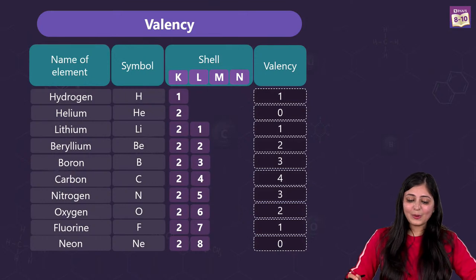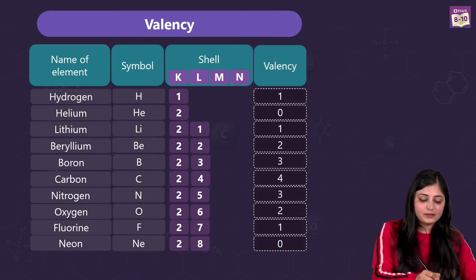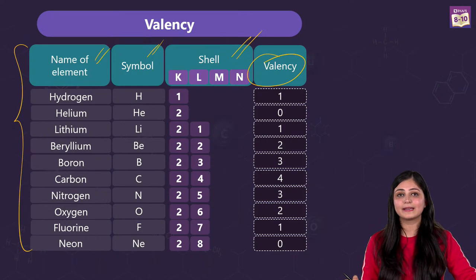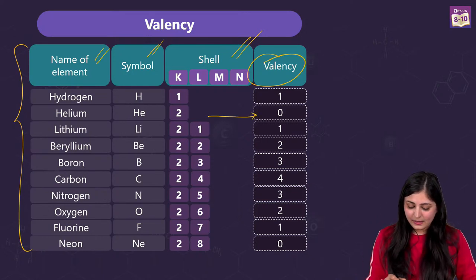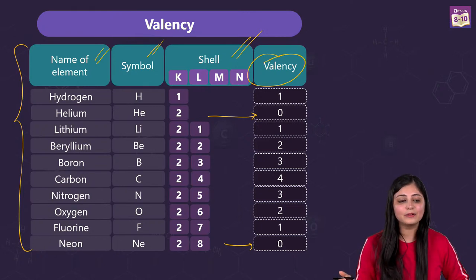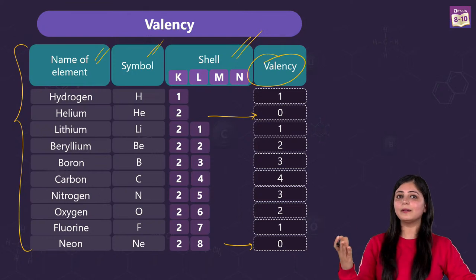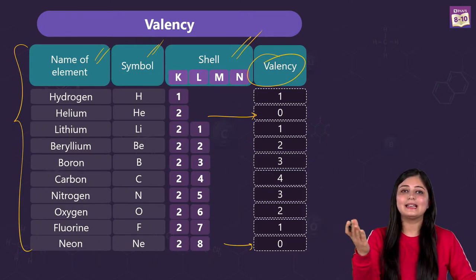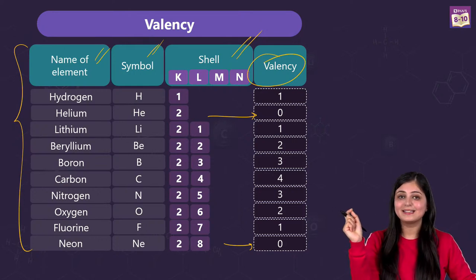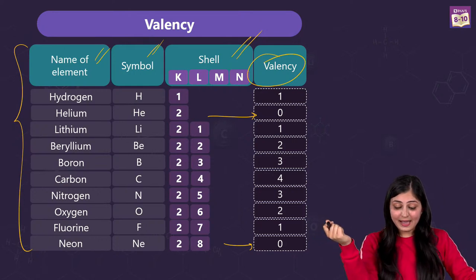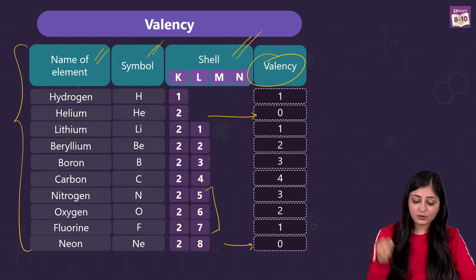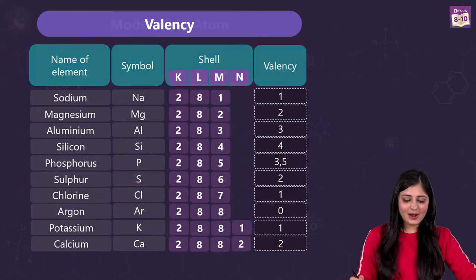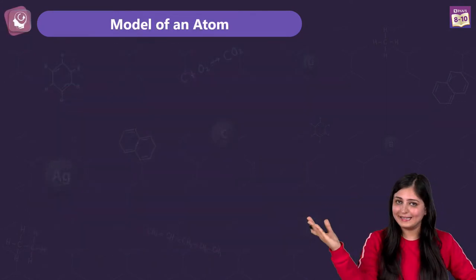We've tabulated valency for you in a table form — you can see the shells, the symbols, the name of the element, and their respective valency. For helium and neon it is zero, meaning they are already stable and not trying to combine — they are noble gases. For the rest: if valence electrons are less than four it equals the valence electron count; if equal to four, valency is four; if more than four, valency is 8 minus valence electrons.